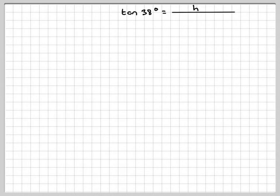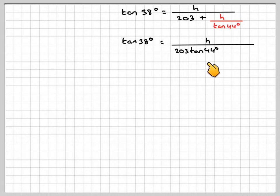Now it really depends on our powers of algebra. First thing I'm going to do is make a common denominator here. So tan 38 is going to be h over 203 times tan 44 plus h all over tan 44.